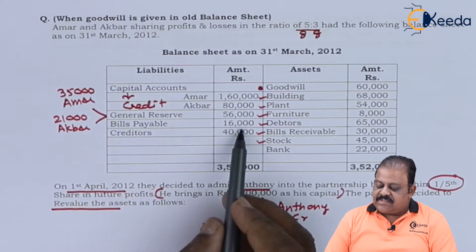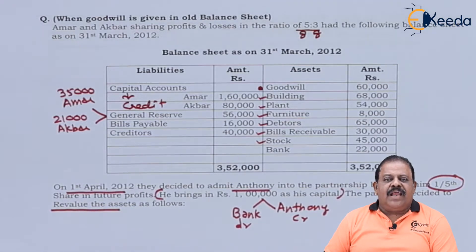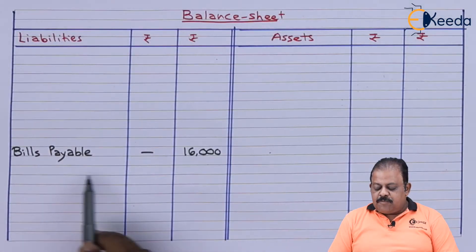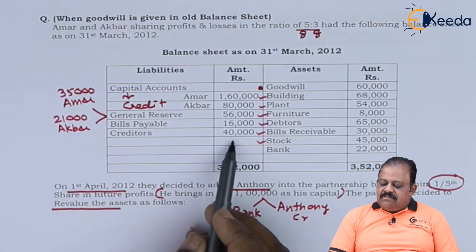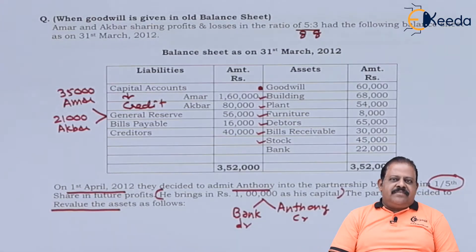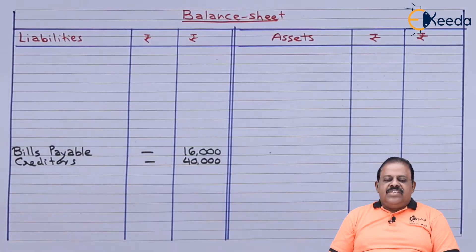Next is bills payable 16,000. There is no adjustment on bills payable, so it will be recorded in the new balance sheet on the liability side: bills payable 16,000. Next, creditors — there is no adjustment on creditors. Creditors will be recorded in the new balance sheet on the liability side: creditors 40,000.